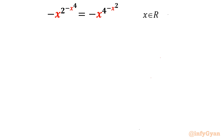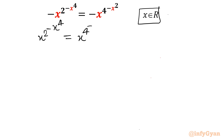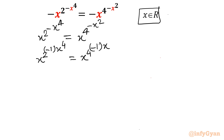I will begin this problem by considering that x is a real value, so we can remove the negative signs on both sides immediately. We can write x^(2^(-x^4)) equal to x^(4^(-x^2)). Now I can write this equation as x^2 with minus written as negative 1 times x^4, equal to x^4 with negative 1 times x^2.